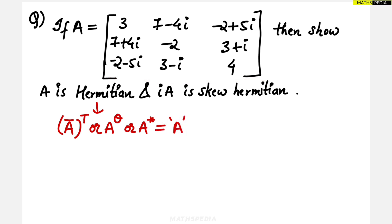This is the condition for a Hermitian matrix. For skew-Hermitian, the conjugate transpose A^θ should be equal to minus A. This is the condition for skew-Hermitian.